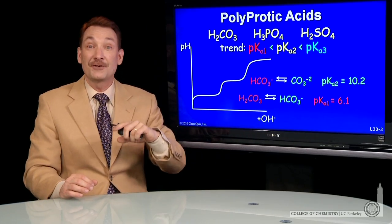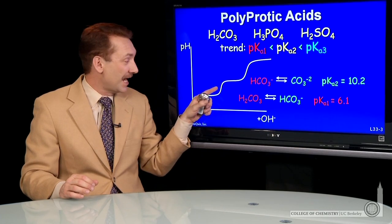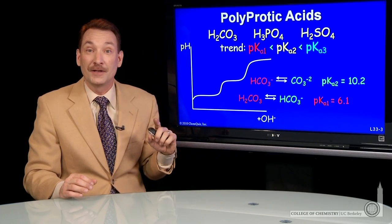So I can sketch out a titration curve. Here's a titration curve with two buffer regions and two equivalence points.